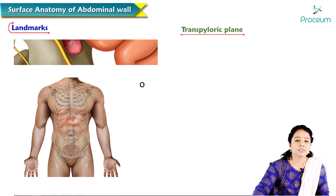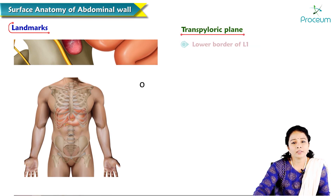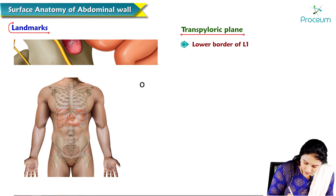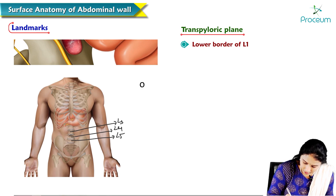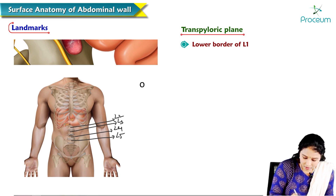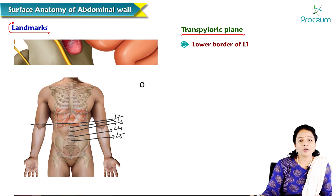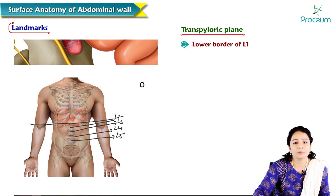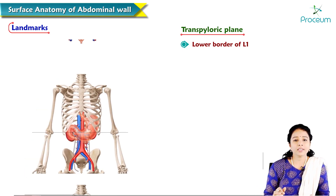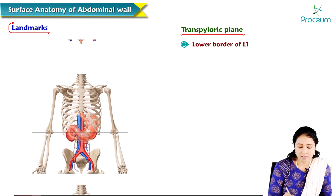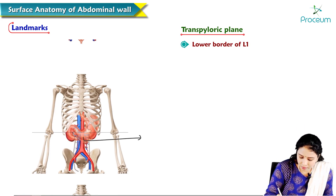The transpyloric plane is located at the lower border of L1 vertebra. Counting from L5 upward — L5, L4, L3, L2, L1 — a horizontal line along the lower border of L1 indicates the transpyloric plane, also called Addison's plane. It is named so because the pylorus of the stomach is located at this level.